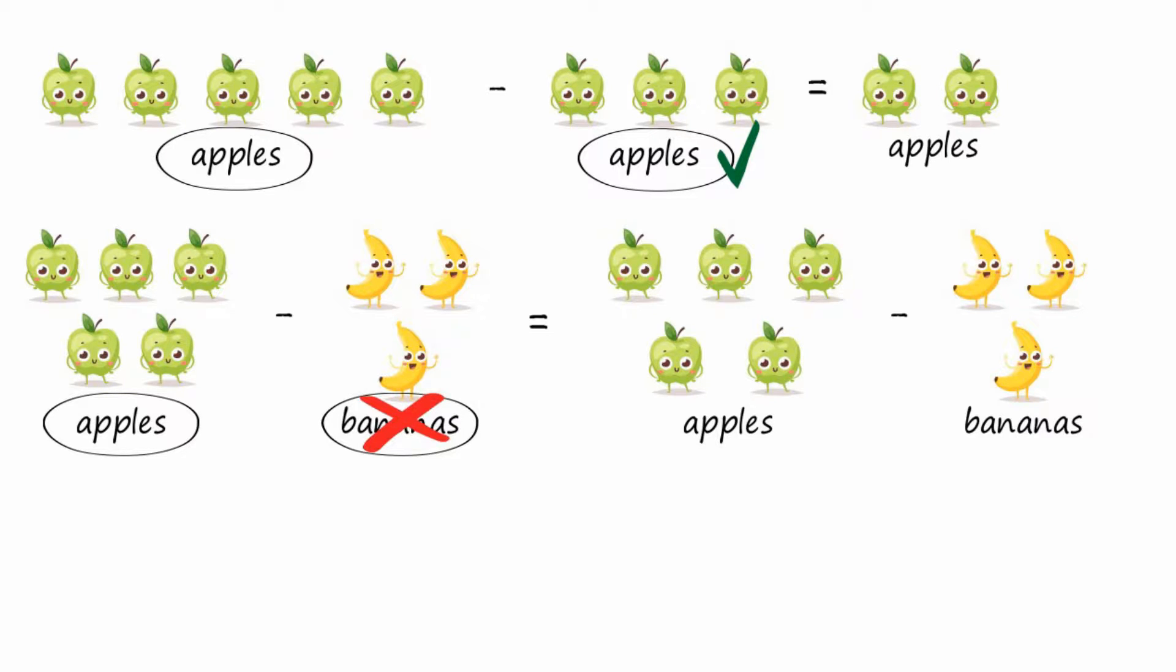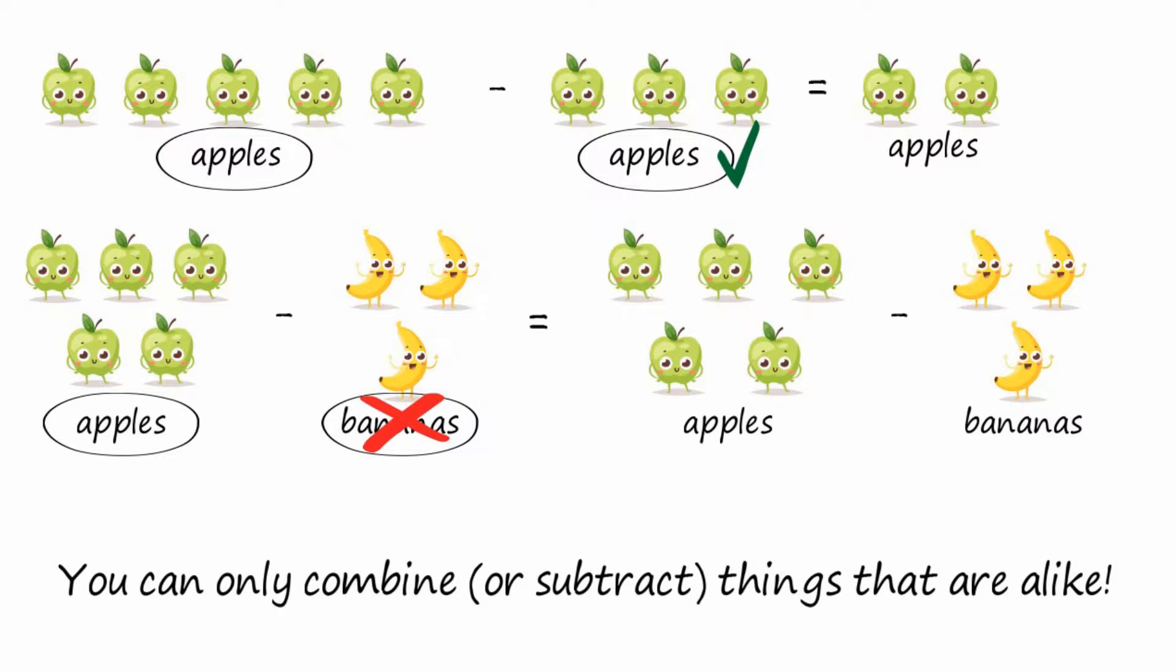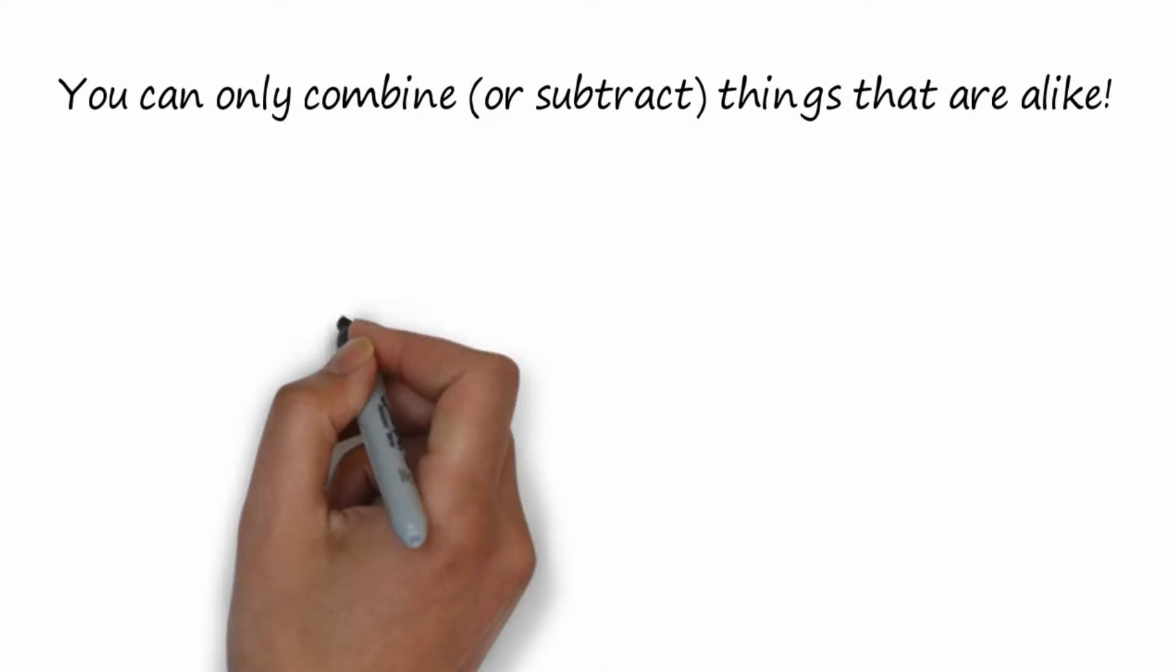You can only combine or subtract things that are alike. And in math, we call this combining like terms.